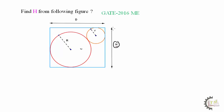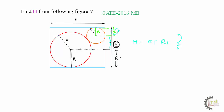How to find H? H is the total height from top to bottom of the rectangle. Since the bigger circle touches the top, its radius R reaches from the top down to the center. Similarly, for the smaller circle, the radius R also reaches from its center to the bottom. So this distance is R and this distance is also capital R. You need to find the middle distance between the two circles to get the total H.